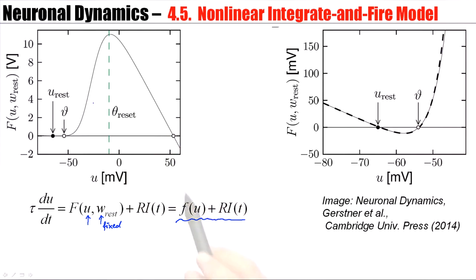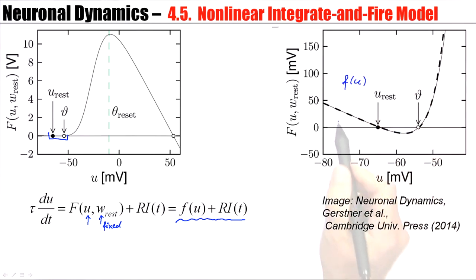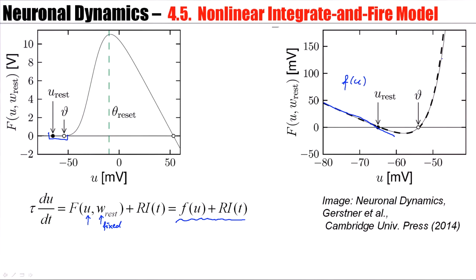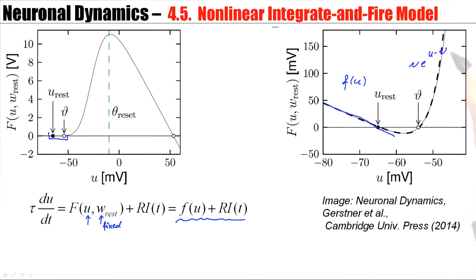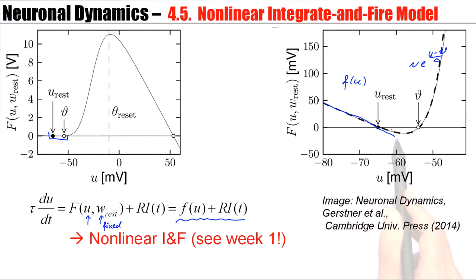This is how the function F(u) looks. If we zoom in to the sub-threshold region, we find that F(u) has a linear part and then bends over quite rapidly. This rapid increase can be described as an exponential part. This is, in fact, a nonlinear integrate-and-fire model — specifically a combination of a linear part plus an exponential part: an exponential integrate-and-fire model.